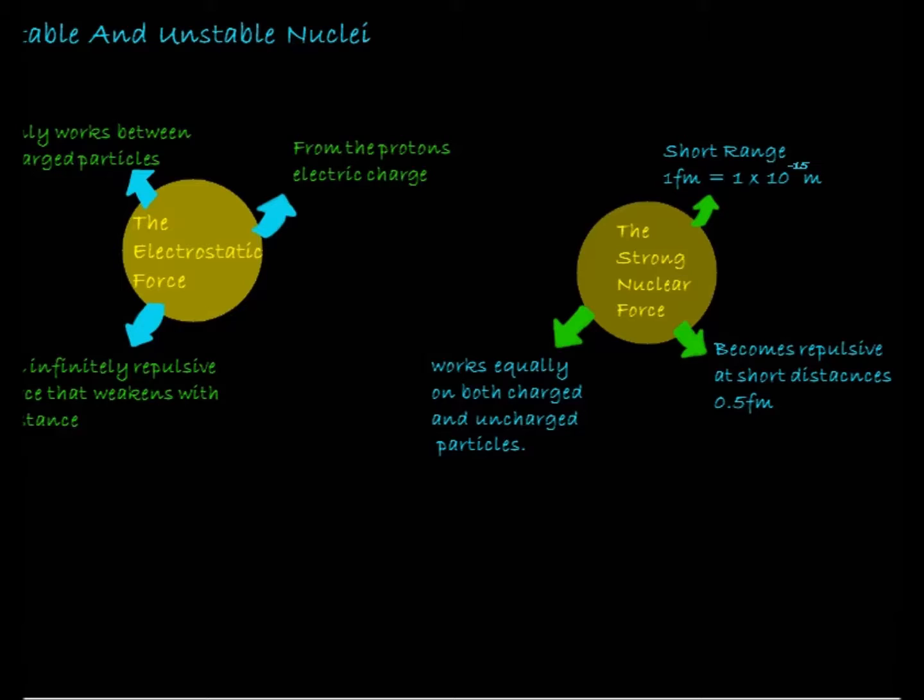Experiments have shown that the range of the strong nuclear force is about 1 femtometre, or the size of a nucleus. If you go further out than this, the strength of the force rapidly decreases. The final thing that is quite fantastic about this force is that it works equally on both charged and uncharged particles.